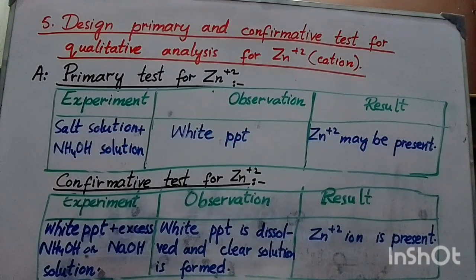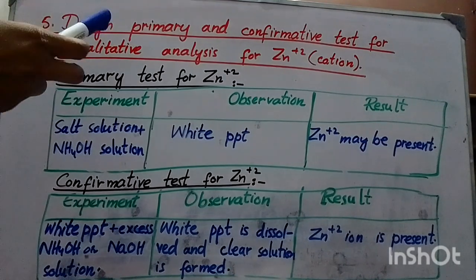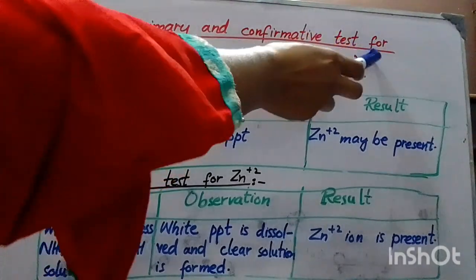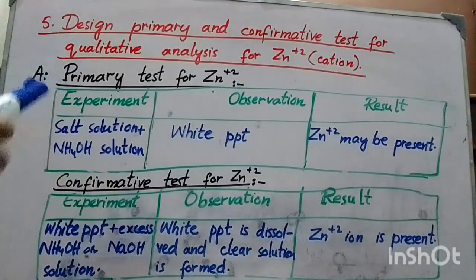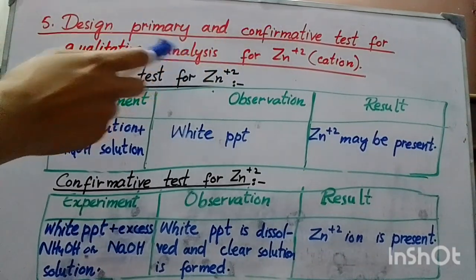If you haven't subscribed to my channel, please subscribe so that you can get solutions from all subjects and every question. Now I am going to explain question number 5. The model paper is chemistry 2023. Question number 5: design primary and confirmative test for qualitative analysis of Zn²⁺.